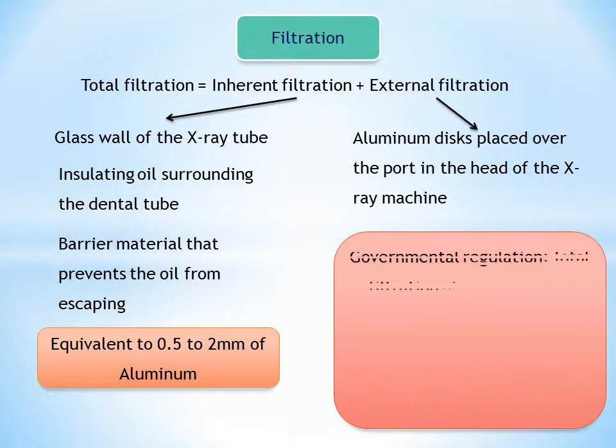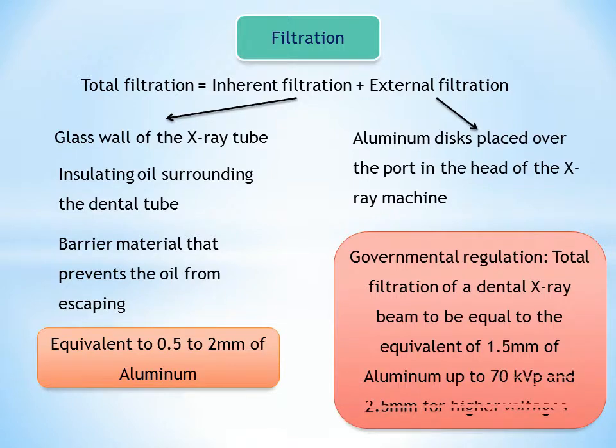The inherent filtration of most X-ray machines ranges from the equivalent of 0.5 to 2 mm of aluminum. External filtration is applied in the form of aluminum disc placed over the port in the head of the X-ray machine. Government regulations require the total filtration in the path of a dental X-ray beam to be equal to the equivalent of 1.5 mm of aluminum up to 70 kV and 2.5 mm of aluminum for all higher voltages.